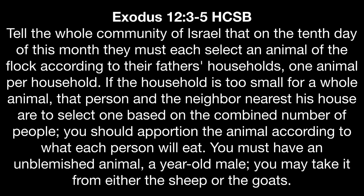Exodus chapter 12 verses 3 through 5: Tell the whole community of Israel that on the tenth day of this month they must each select an animal of the flock according to their father's households — one animal per household. If the household is too small for a whole animal, that person and the neighbor nearest his house are to select one based on the combined number of people. You should apportion the animal according to what each person will eat. You must have an unblemished animal, a year-old male. You may take it from either the sheep or the goats.